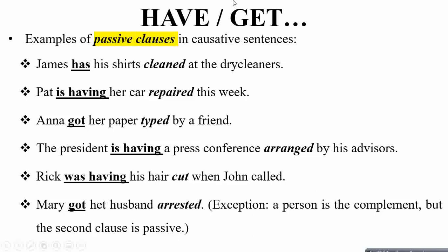Now for passive clause examples with 'have' and 'get': 'James has his shirts cleaned at the dry cleaner' — 'cleaned' is the past participle. 'Pat is having her car repaired this week.' 'Anna got a paper typed by her friend.' 'The president is having a press conference arranged by his advisors.' 'Rick was having his hair cut when John called.' 'Mary got her husband arrested.'